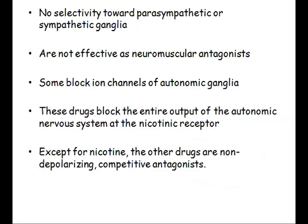There is no selectivity toward parasympathetic or sympathetic ganglia. Once a ganglionic blocker is given, it blocks nicotinic receptors at the parasympathetic division with the same affinity as at the sympathetic ganglia. They are not effective as neuromuscular antagonists. Some block ion channels coupled to receptors on autonomic ganglia, and these drugs block the entire output of the autonomic nervous system at the nicotinic receptor.